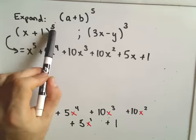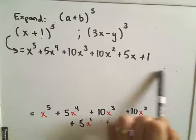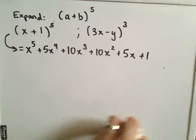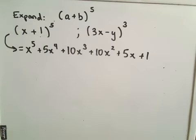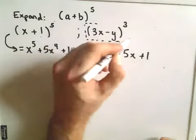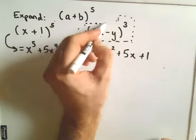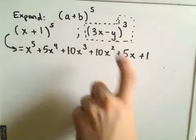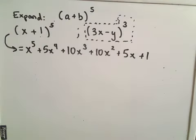In another video I'm going to expand (3x − y) to the third using the binomial theorem. That one will be a little trickier — there's a minus sign and some coefficients involved — but feel free to dig around and I'll have that one up as well.